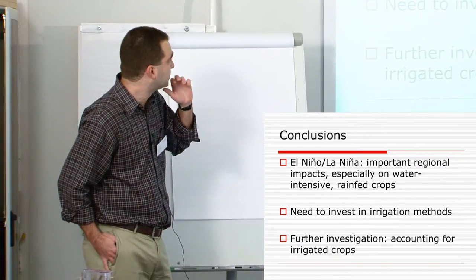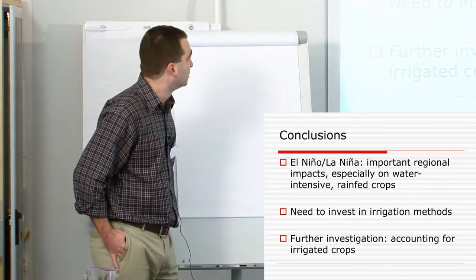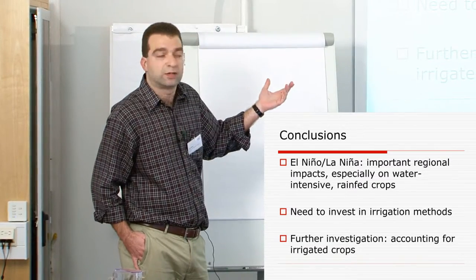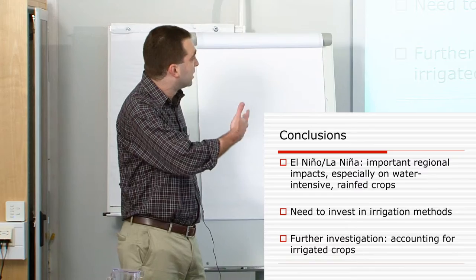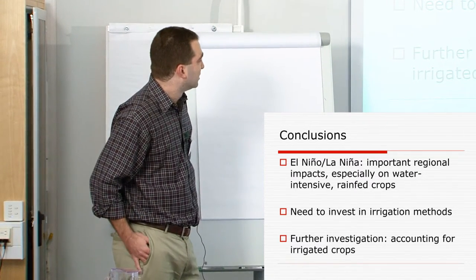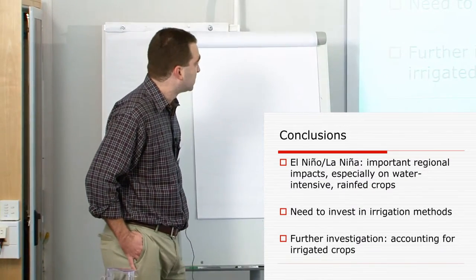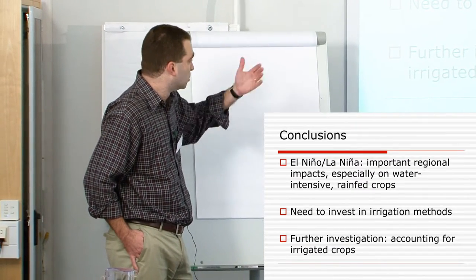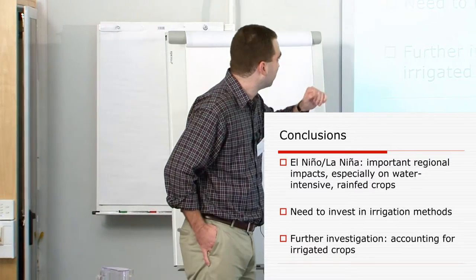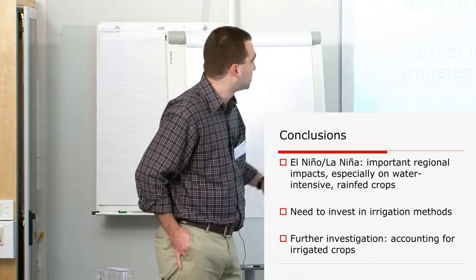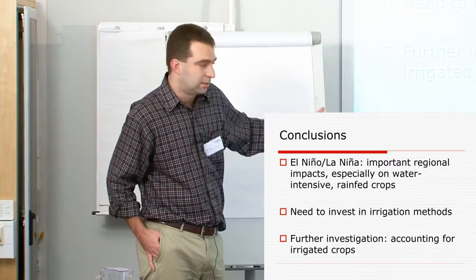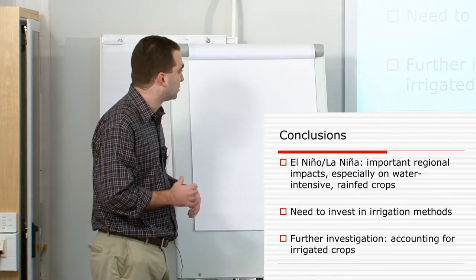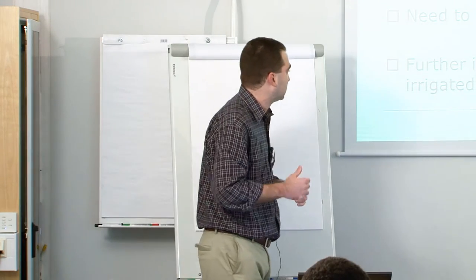What we conclude in the paper is that, as we expect, there are very important regional impacts in agricultural production, especially when we are talking about water-intensive and rain-fed crops. Because the most problems with El Niño and La Niña are associated with precipitation. So we identify a need to invest in irrigation methods, and also to increase the modeling capacity to project what happens in La Niña phase. For further investigation, in order to account for the benefits of adapting by irrigation, we also want to make the same model but to see the impact between irrigators and non-irrigators. So, how irrigation can be used as an adaptation strategy. Thank you.